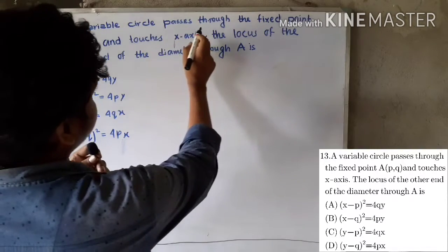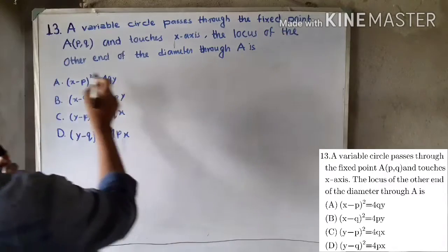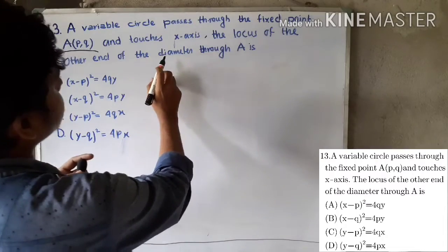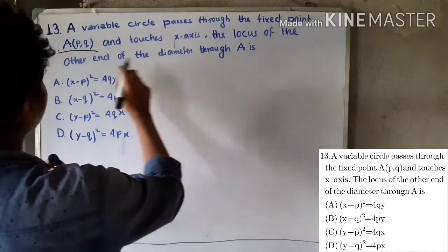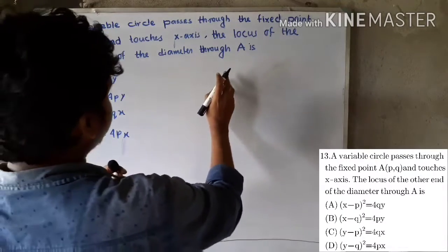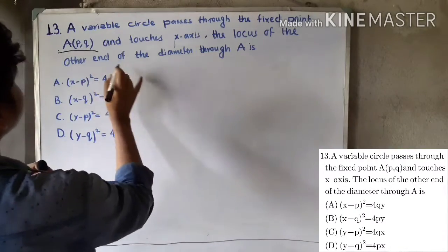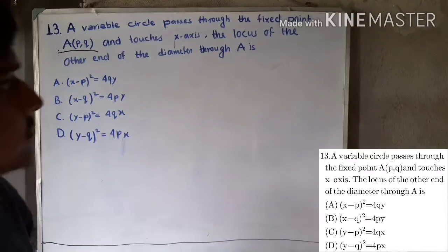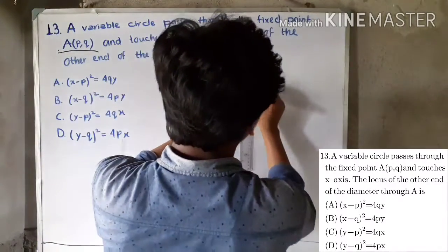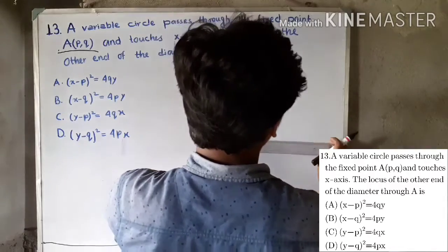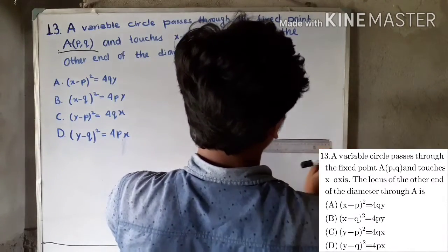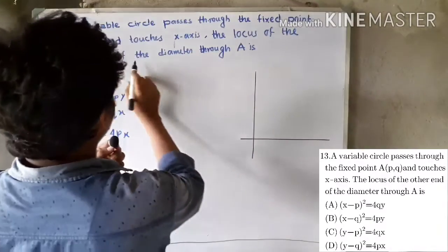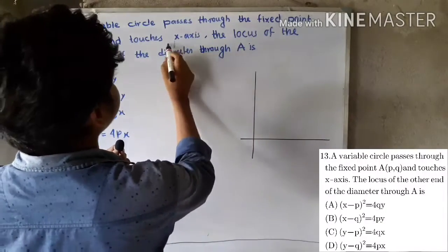A variable circle passes through the fixed point A with coordinates (p, q) and touches the x-axis. We need to find the locus of the other end of the diameter through the point where the circle touches the x-axis.